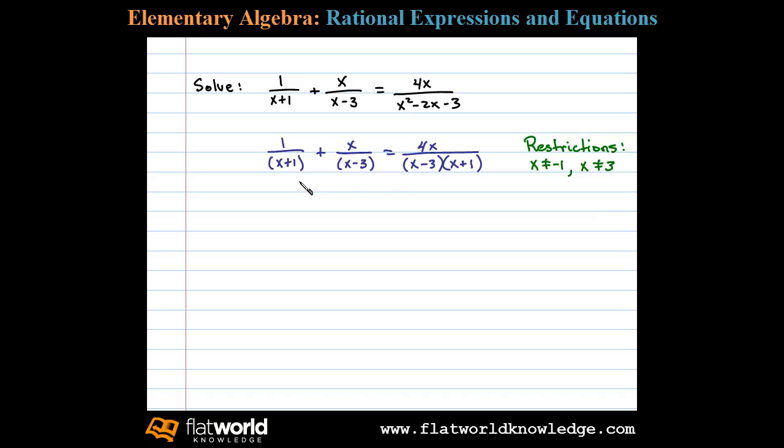Once we make note of the restrictions we then multiply both sides by the LCD. In this case the LCD is x minus 3 times x plus 1. Multiplying both sides by the LCD and then distributing is equivalent to multiplying all the terms by the LCD.